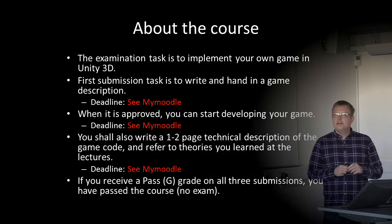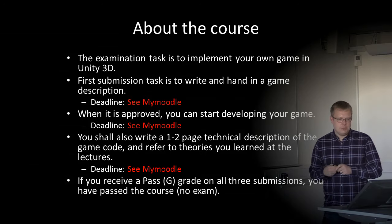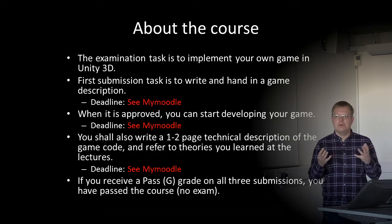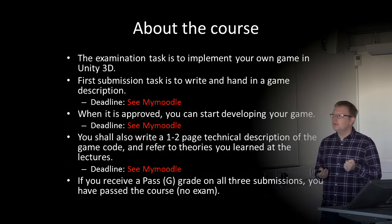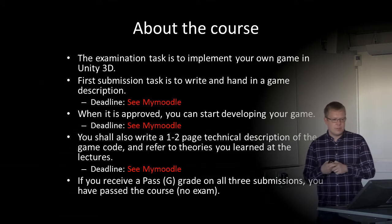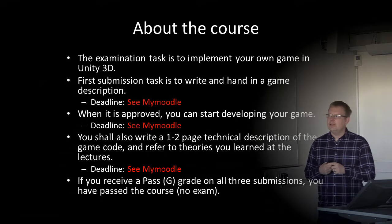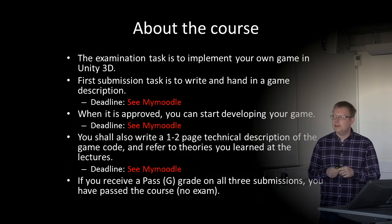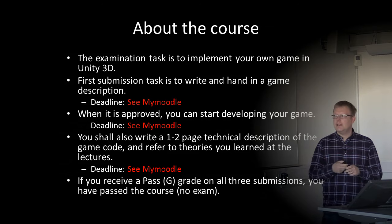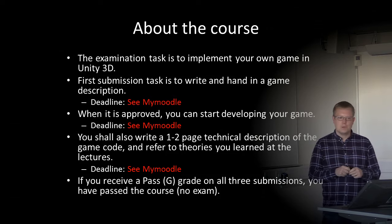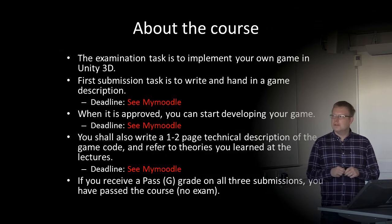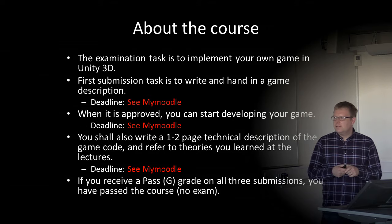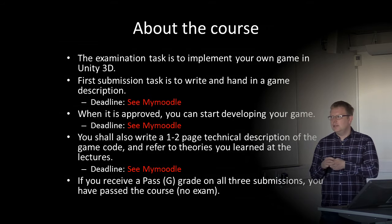The main animation task is to implement your own game in the Unity 3D engine and you decide what type of game you shall develop. The first submission task is to write and hand in a game description where you describe the type of game you're interested in implementing. The deadline is on the MyMoodle course web page. When it is approved you can start developing the actual game and submit it. The deadline is in August.